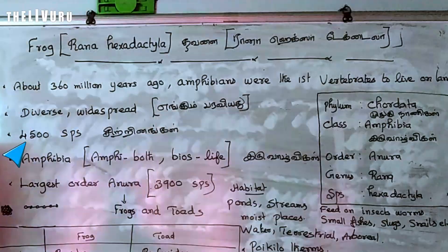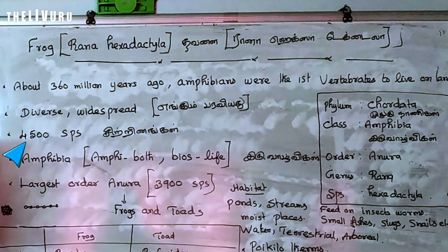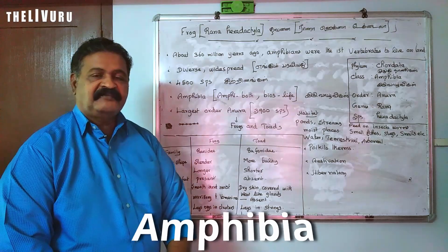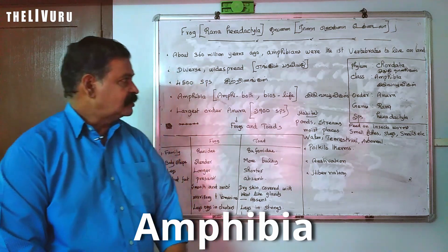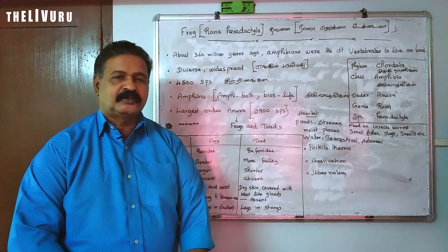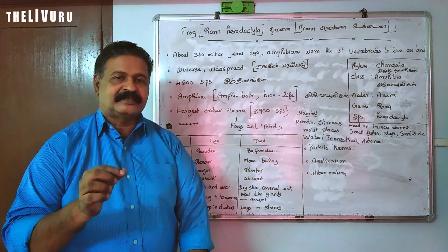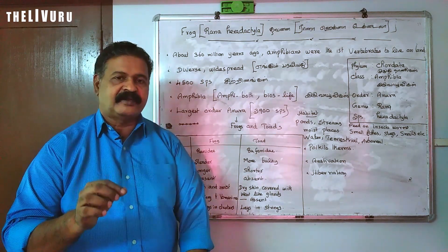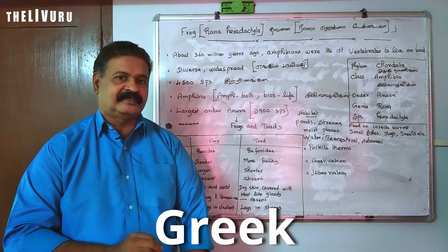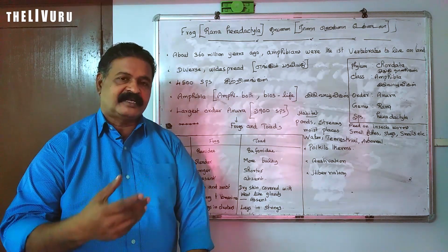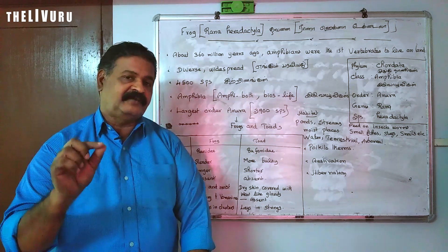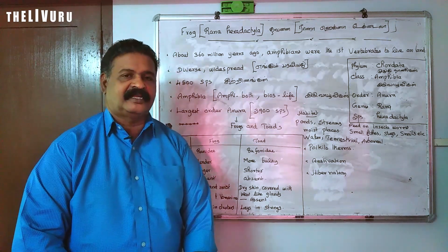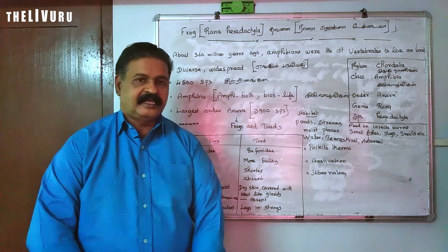There are 4,500 species in Amphibia. Amphibia belongs to class Amphibia. This term is derived from a Greek word. The Greek word is amphibia.